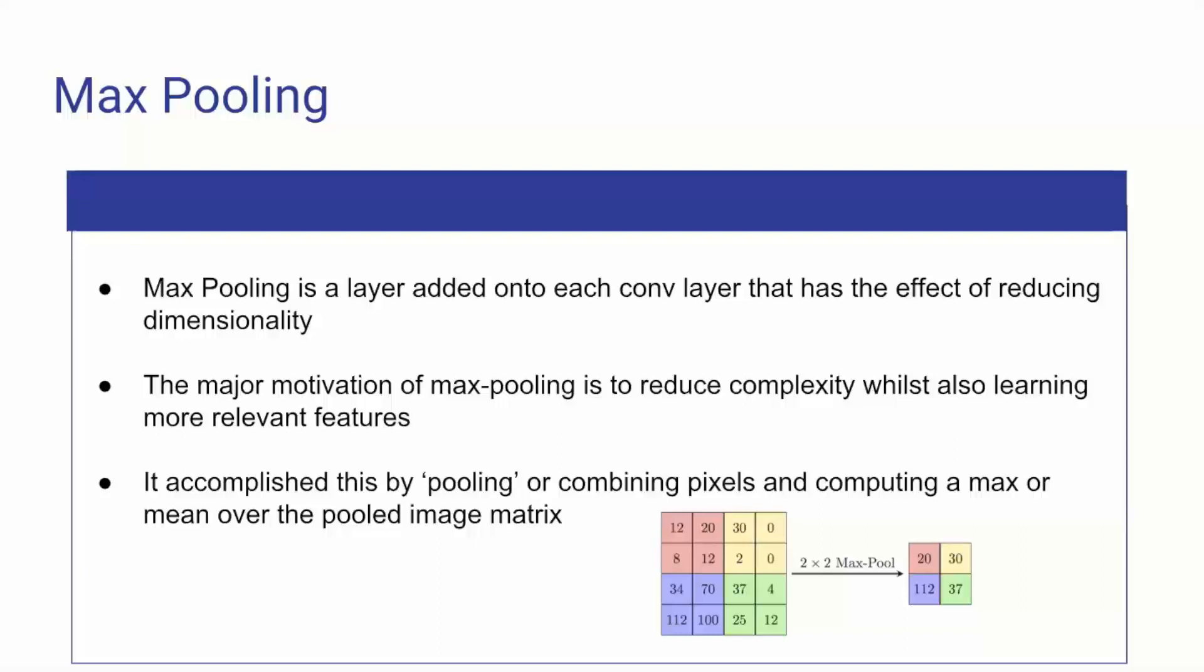But the major motivation behind it is we reduce complexity. As you can probably imagine, images contain a lot of features and in order to classify them, CNNs learn a lot of features. So it's essentially sort of like dropout for the convolutional layers in that we're trying to reduce the amount of features and learn only the most important ones to solve the problem. And as I said, this is just combining pixels and computing max or mean over the little matrix. It's just a little diagram of that below.